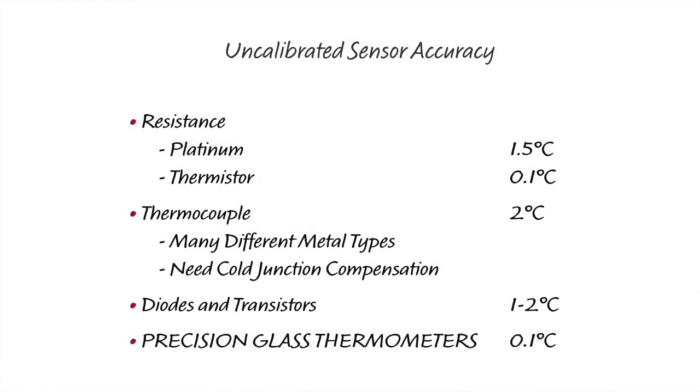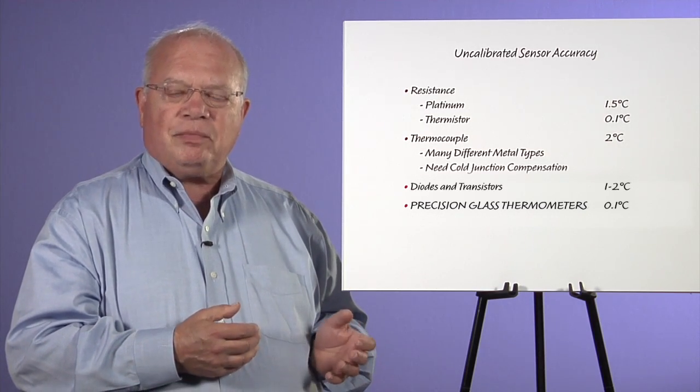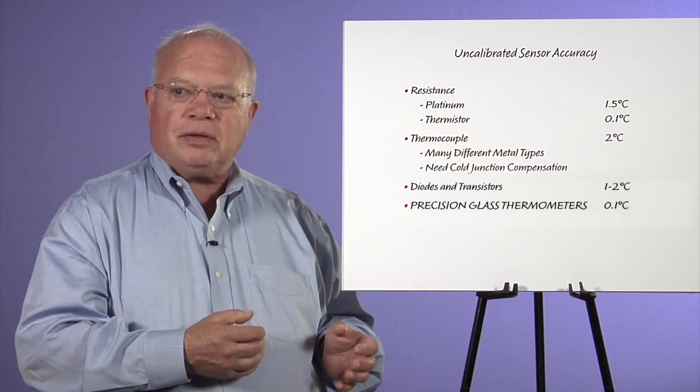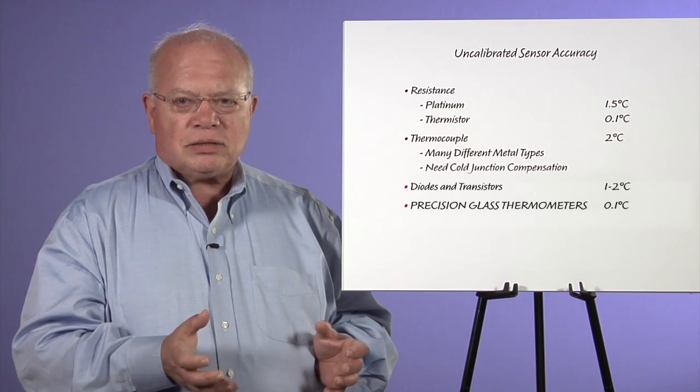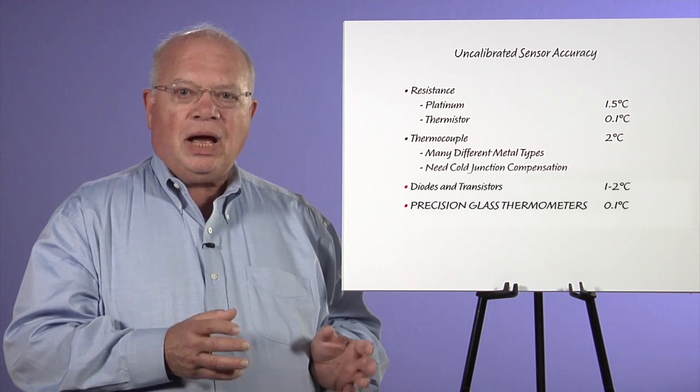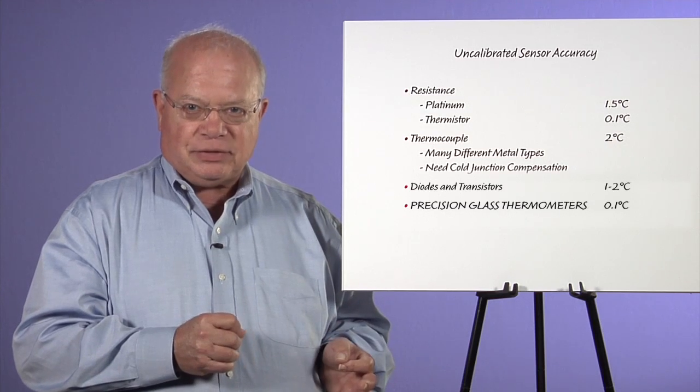How good are these sensors when we first get them? The platinum sensors can be anywhere from 0.3 degrees to 1.5 degrees C as manufactured because it's the length of the platinum resistance that changes. Thermistors are an oxide composition and they're actually trimmed at manufacture, and you can buy those to 0.1 degrees C accuracy.